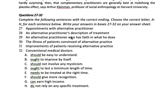The second subject is 'an alternative practitioner's description of treatment.' The third is 'an alternative practitioner who has faith in what he does.' The fourth is 'the illness of patients convinced of alternative practice.' The fifth is 'improvements of patients receiving alternative practice.' And the sixth concerns 'conventional medical doctors' — those who practice allopathic medicine. So these are our six questions, and now we need to translate the endings as well.